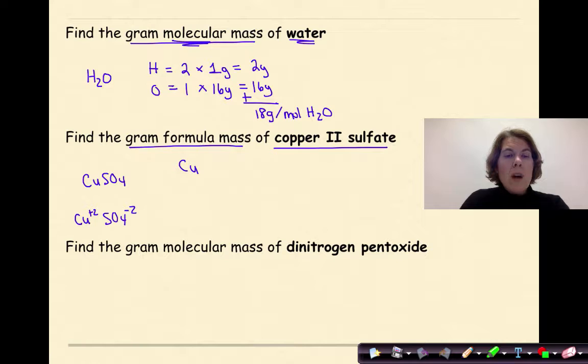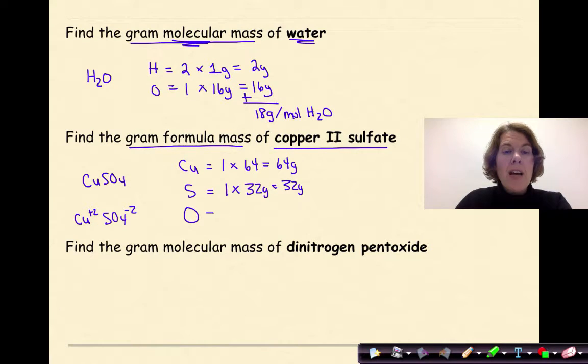So Cu, S, and oxygen. If I look at my formula, I know that I have one copper with an atomic mass of 64. For sulfur, I have one sulfur times an atomic mass of 32 grams. So one times 32 is 32. And for oxygen, I know that I have four oxygens, each with an atomic mass of 16. So 4 times 16 is 64 grams. So when I add these all up, I'm going to get 160 grams per mole.